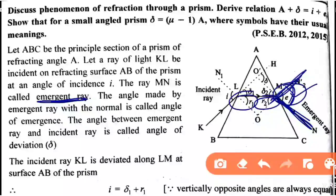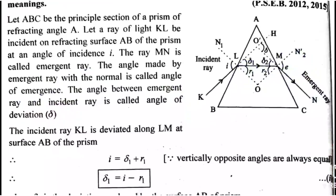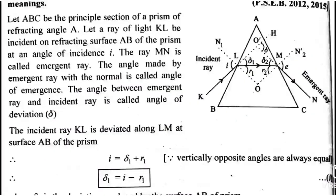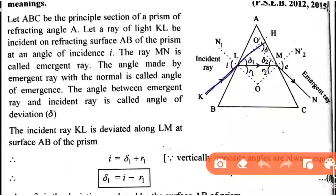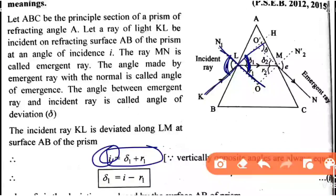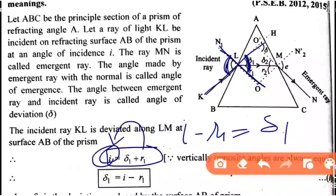Starting with the incident ray KL — the ray is deviated along LM at surface AB. The angle of incidence i equals the deviation angle delta-1 plus r1, just as derived in the previous article. So rearranging: i = delta-1 + r1, which gives us delta-1 = i minus r1.